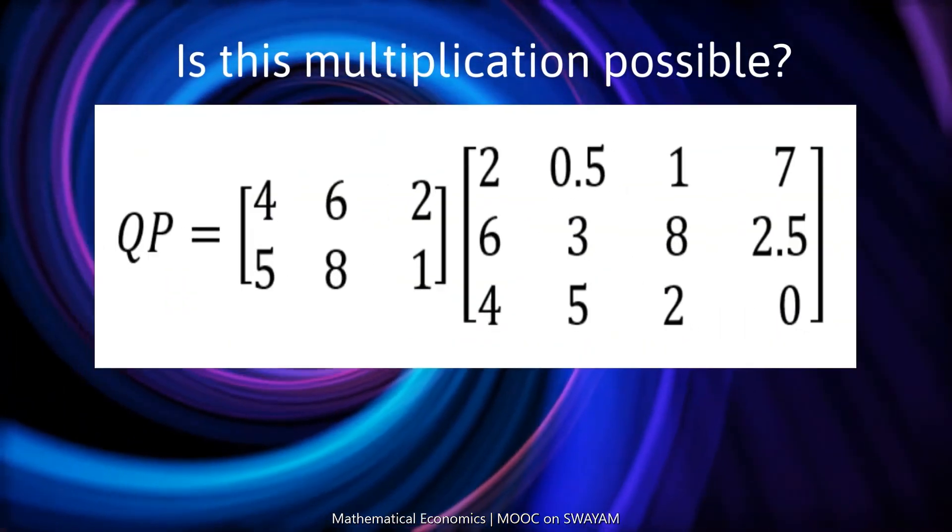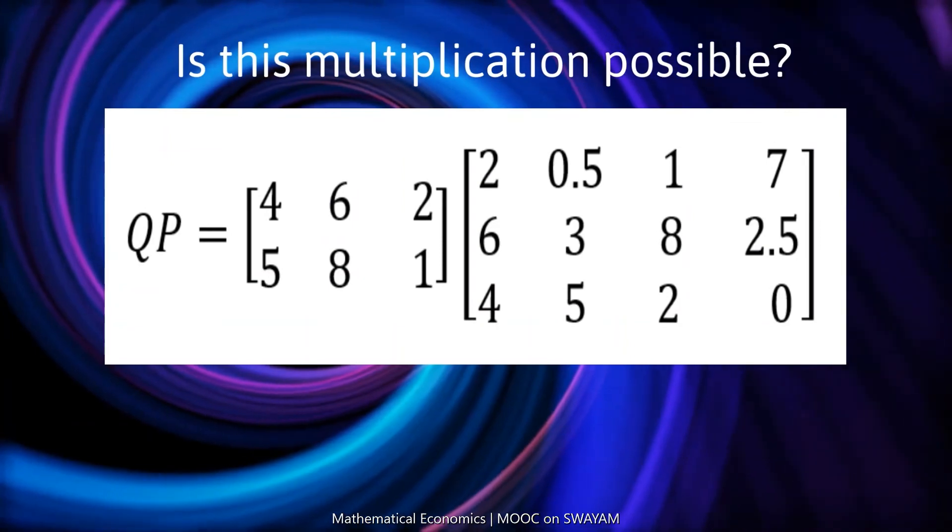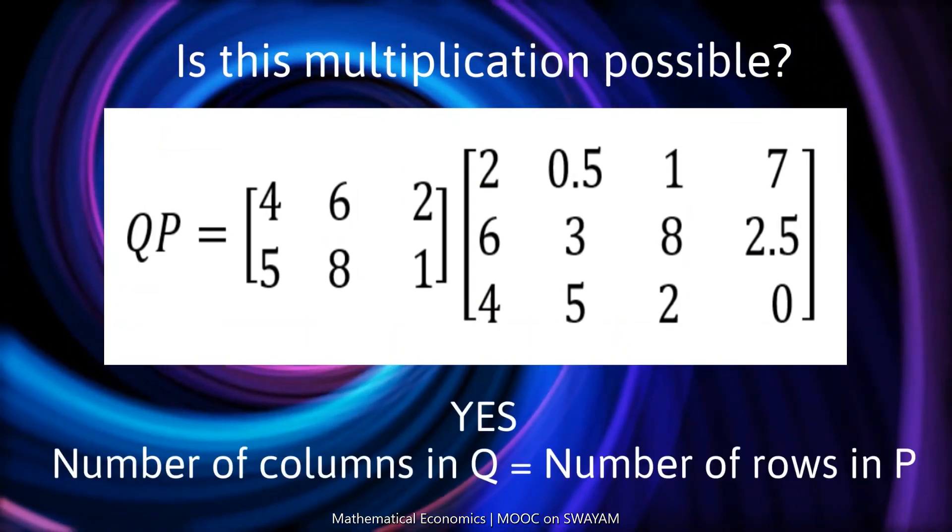Is this possible? Yes, because the number of columns in Q is 3 and that is equal to the number of rows in P.